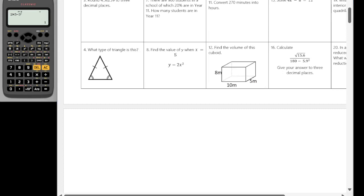Question three. Round 4.56259 to three decimal places. So the third decimal place is 2. So we're going to round that up. So that's going to become 4.563.